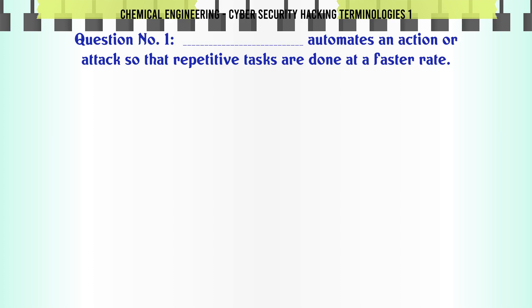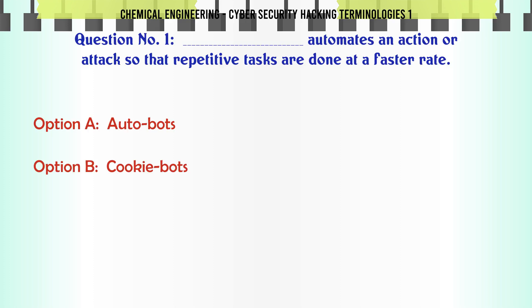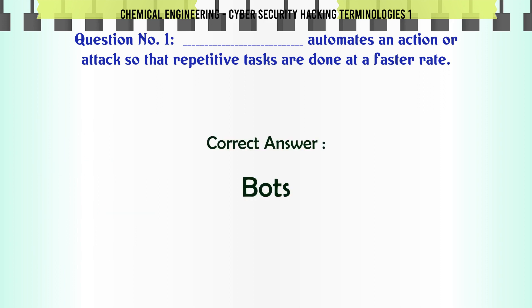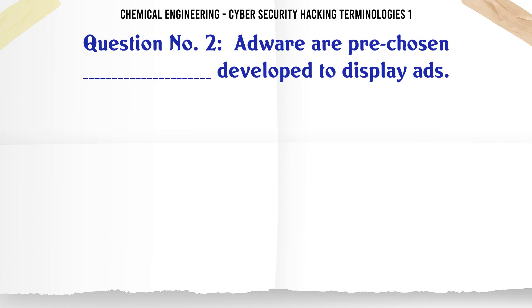Automates an action or attack so that repetitive tasks are done at a faster rate. A. Autobots B. Cookie Bots C. Robots D. Bots. The correct answer is Bots.